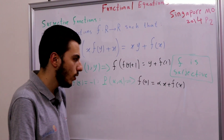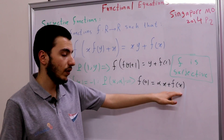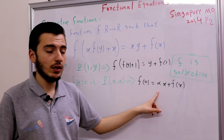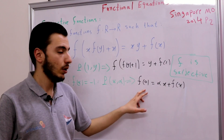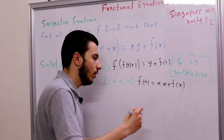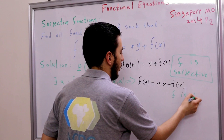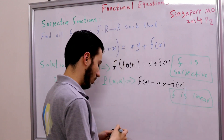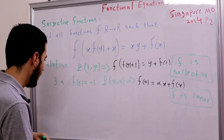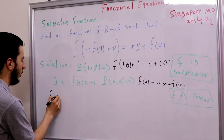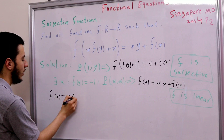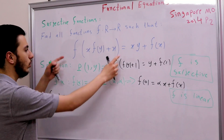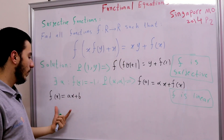In other words, our function f is linear — it is −α·x plus the constant f(0). So we can say f is linear, and we just need to find the constants. Since f is linear, we write f(x) = ax + b for some constants a and b, and we'll substitute into the original functional equation to find a and b.